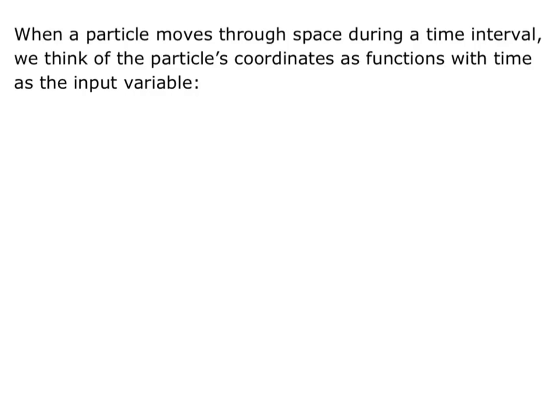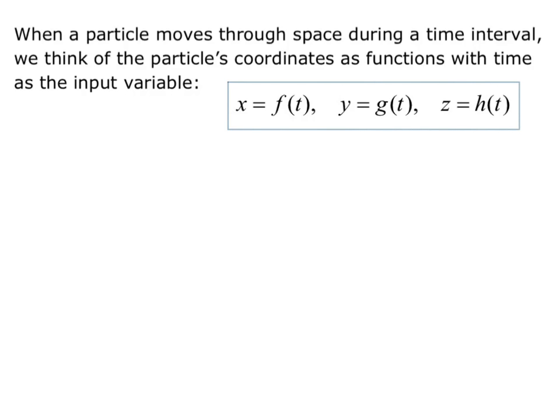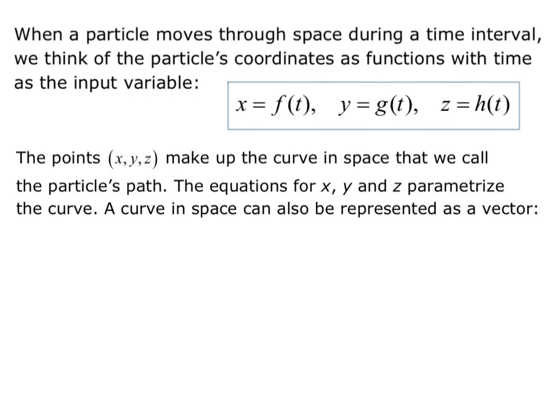When a particle moves through space during a time interval, we think of the particle's coordinates as functions with time as the input variable. This gives us the equations x equals f of t, y equals g of t, and z equals h of t. So each variable is a different function of time. The points x, y, z make up the curve in space that we call the particle's path. The equations above parametrize the curve.